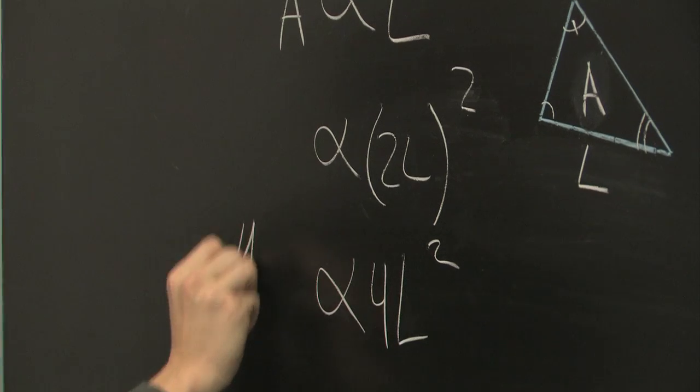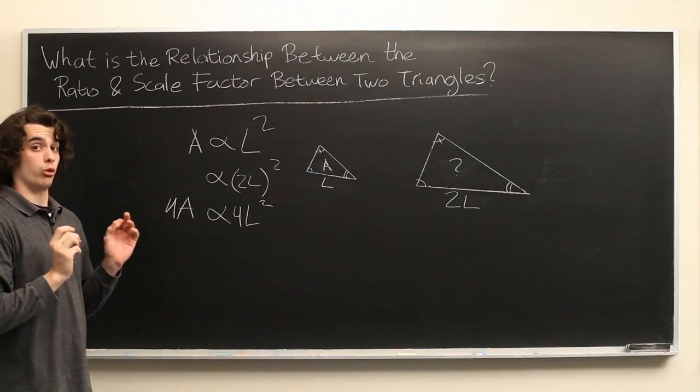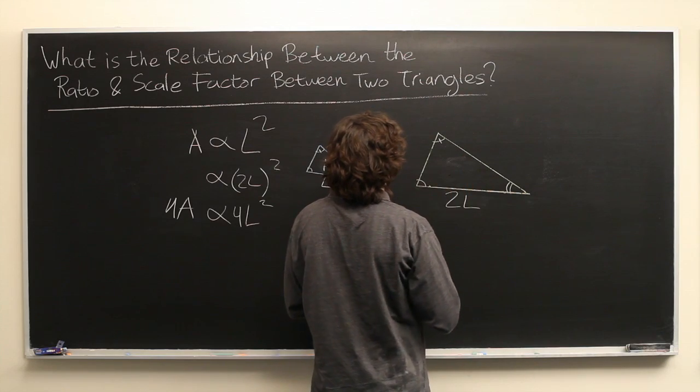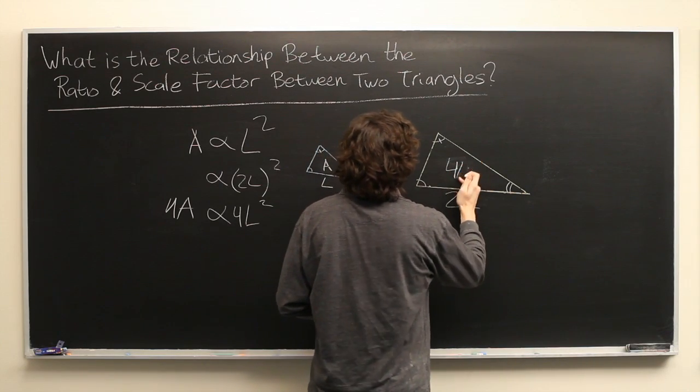So, naturally, the area should be quadrupled to 4A, rather.